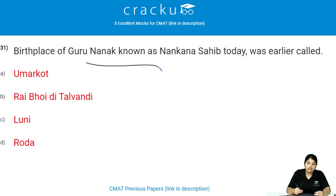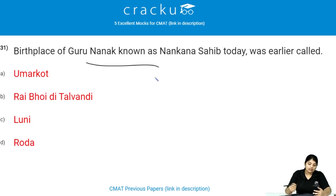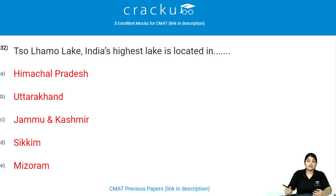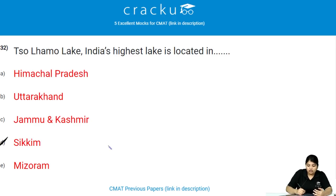The birthplace of Guru Nanak, known as Nankana Sahib today, was earlier called Rai Bhoe di Talwandi. Tsomgo Lake, India's highest lake, is located in Sikkim, in North Sikkim.